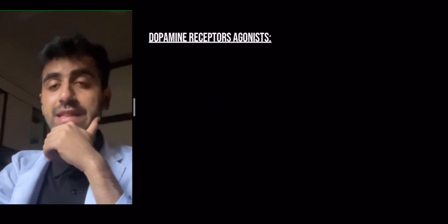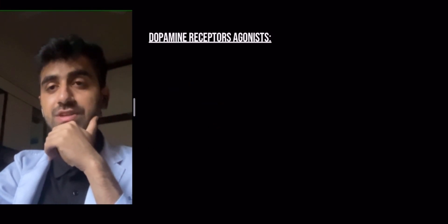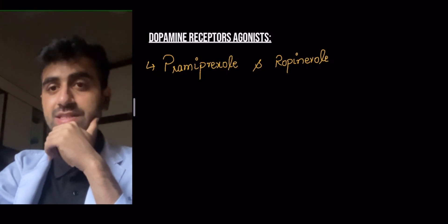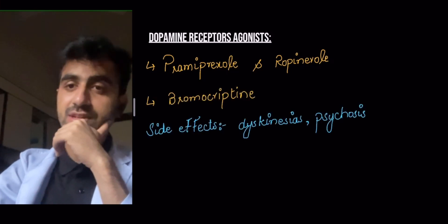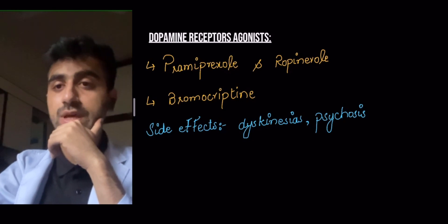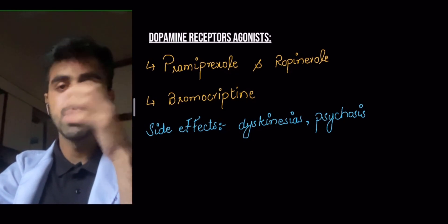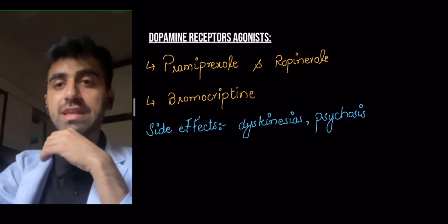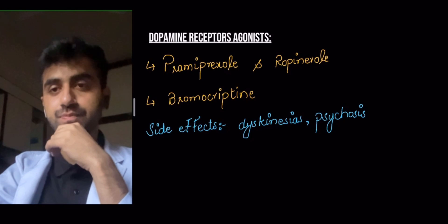Finally, for the sake of completion, here are the dopamine receptor agonists: pramipexole, ropinirole, and bromocriptine. Their side effects, of course, include dyskinesias and psychosis due to excess dopamine activity in the brain.